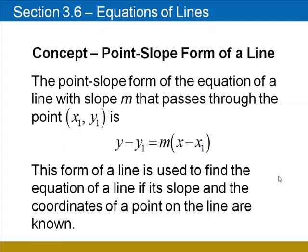The point-slope form of the equation of a line with slope m that passes through the point (x₁, y₁) is y minus y₁ equals m times (x minus x₁). This form of a line is used to find the equation of a line if its slope and the coordinates of a point that is not the y-intercept are known.